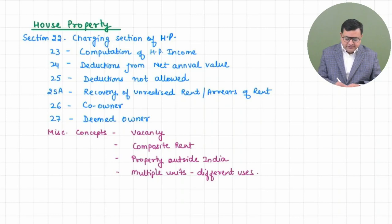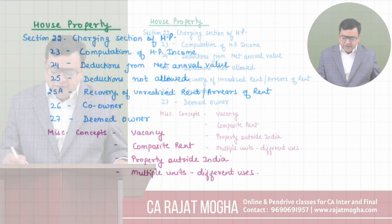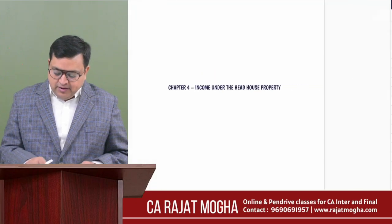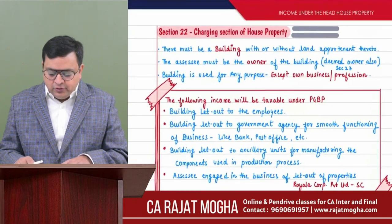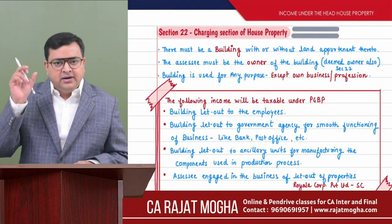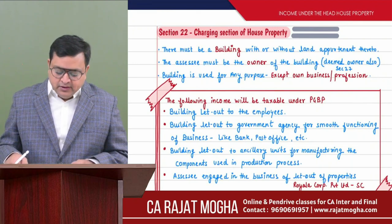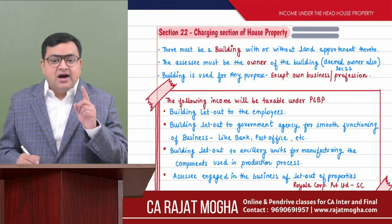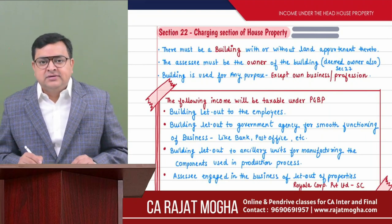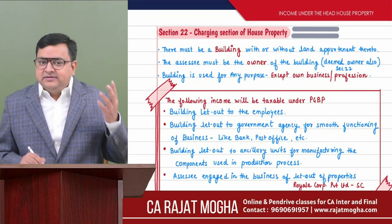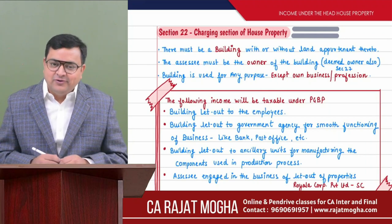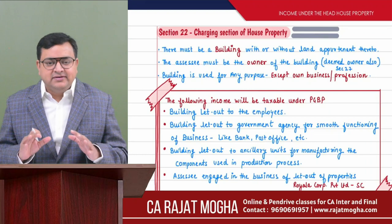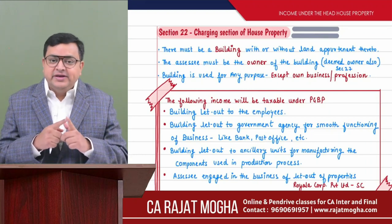Let's start with Section 22. If you come to your book — I believe you have already downloaded this book, available in PDF format from rajatmova.com under the download section — Section 22 is the charging section for house property, similar to how Section 15 is the charging section for salary and Section 28 is the charging section for PGVP. First of all, there should be a building.